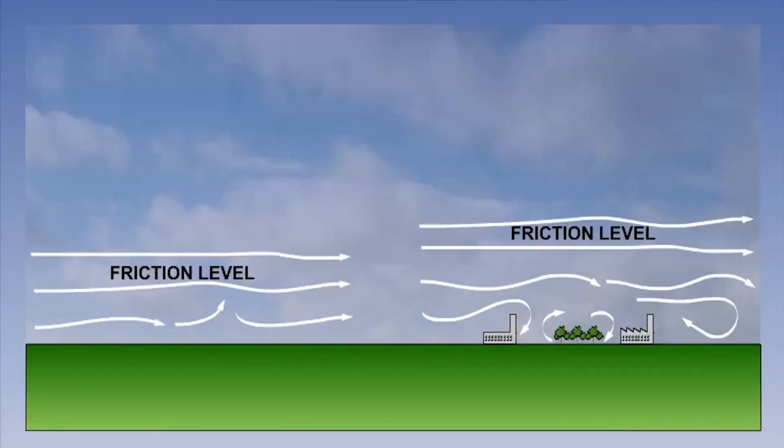If we first look at mechanical turbulence, we can see that the greater the physical obstruction, the greater the depth of airflow that is disturbed.